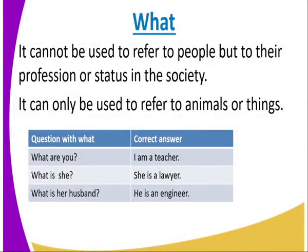Let's look at 'what' as a pronoun. It cannot be used to refer to people directly, but it can refer to their professional status in society. It can also be used to refer to animals or things. For example: What are you? I am a teacher. What is she? She is a lawyer. What is his husband? He is an engineer. You can see 'what' in each question is replaced with a profession.